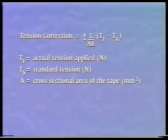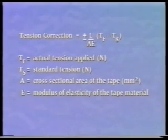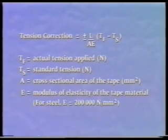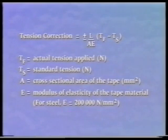For a line measured as L, the tension correction is given by L multiplied by (TF minus TS) divided by AE. Where TF is the actual tension applied to the tape, TS is the tension at which the tape was calibrated, A is the cross-sectional area of the tape, and E is the modulus of elasticity of the tape material — a typical value for steel being 200,000 Newtons per square millimeter. The tension correction can be positive or negative depending on the values of TF and TS.